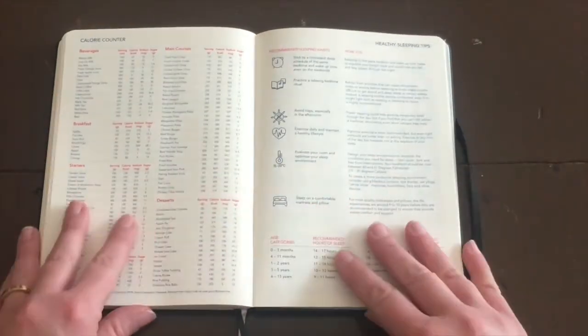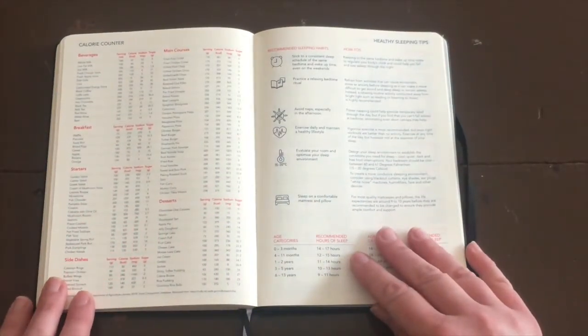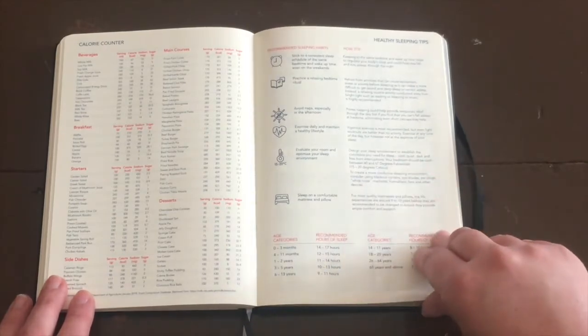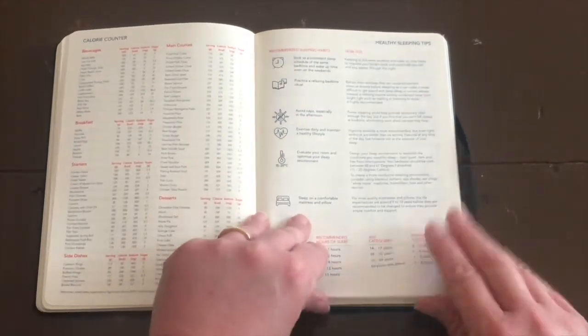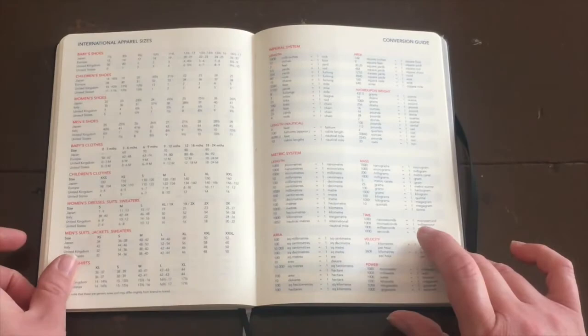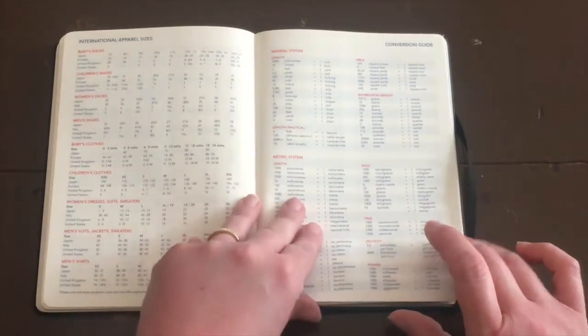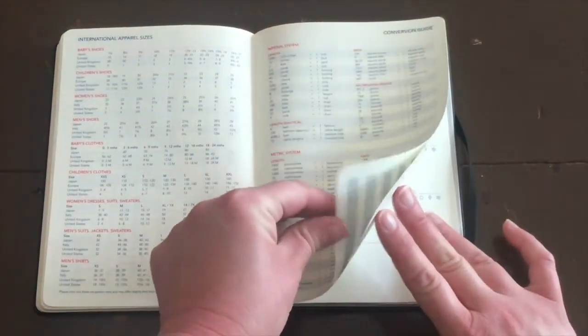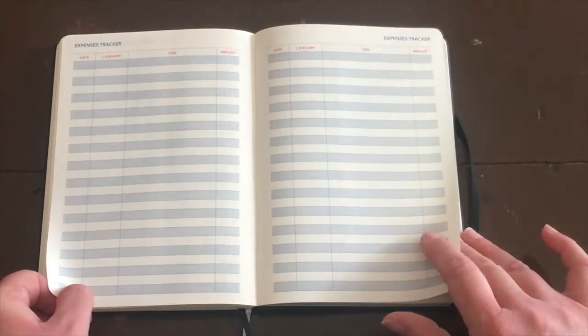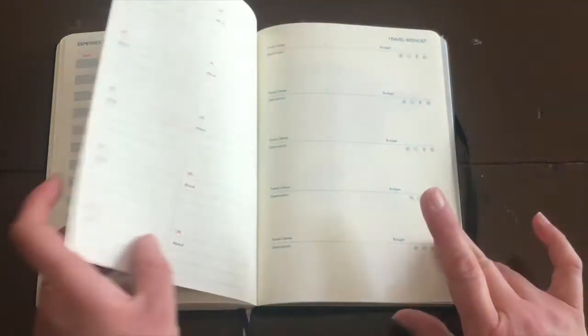And then we get into a few more helpful pages as well. Whether you're calorie counting or you're looking at healthy sleep tips. Over the page they have international apparel sizes which is handy when you're shopping and buying presents, and a handy conversion guide.